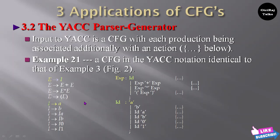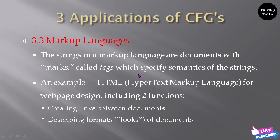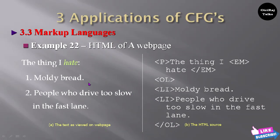You can simplify from those production rules. The next application of context-free grammar is markup languages. The strings in a markup language are documents with marks called tags which specify semantics of the strings. An example is HTML — hypertext markup language for web page design — including two functions: creating links between documents and describing formats of documents.